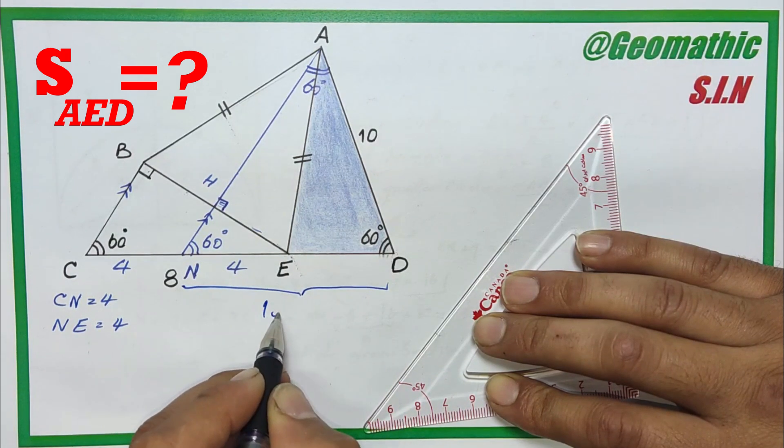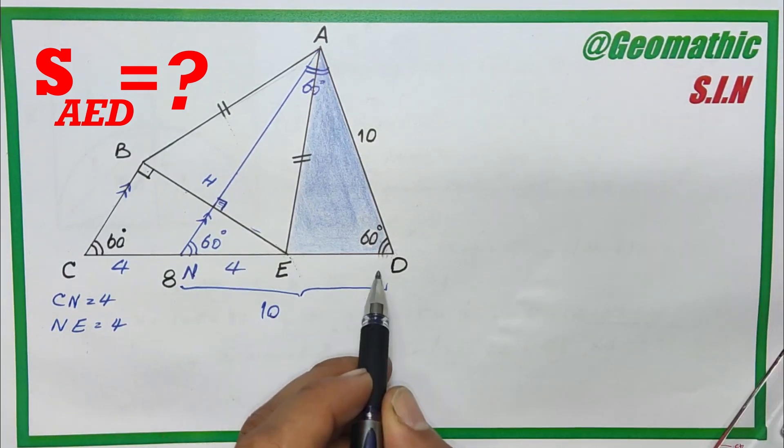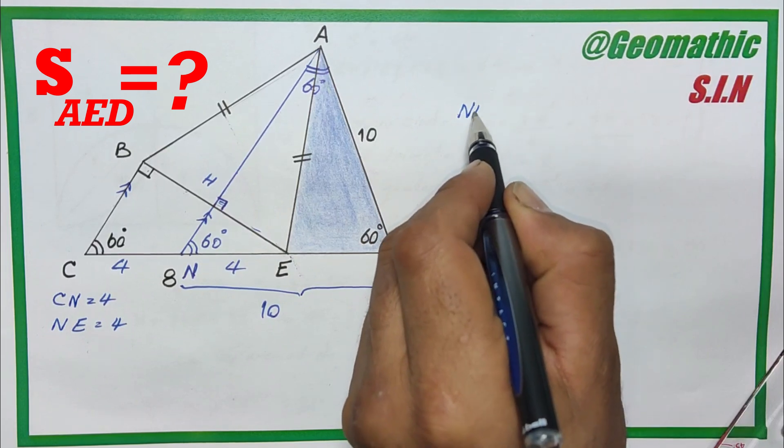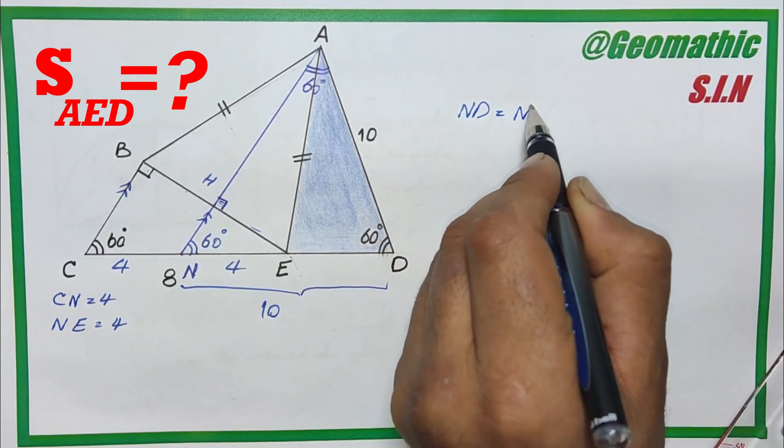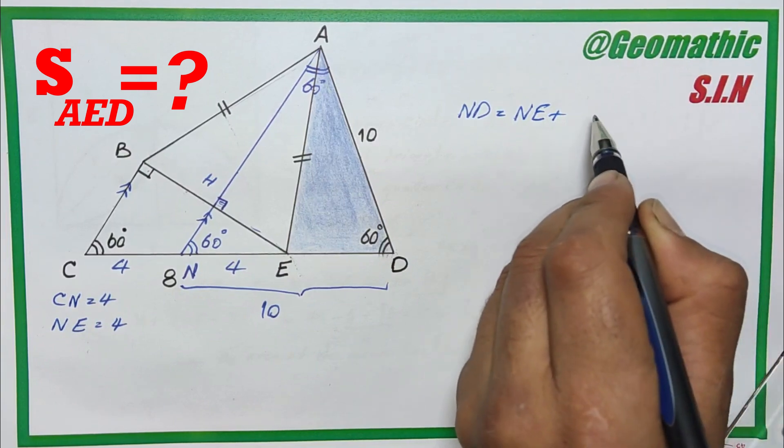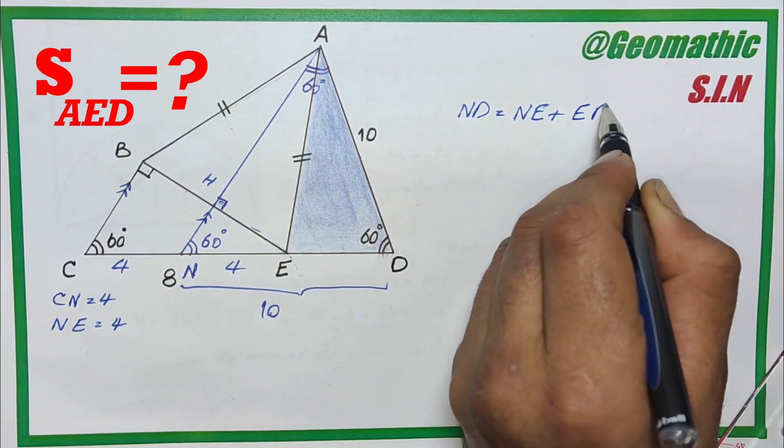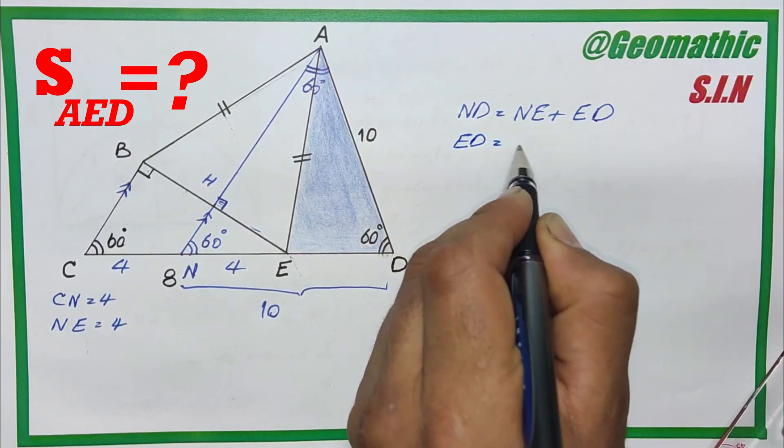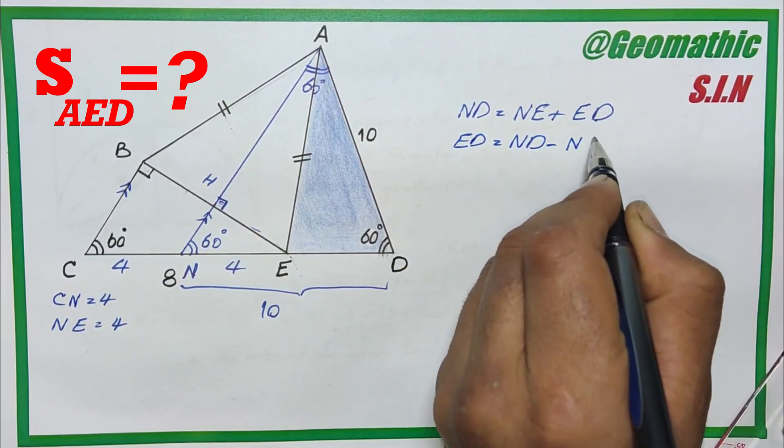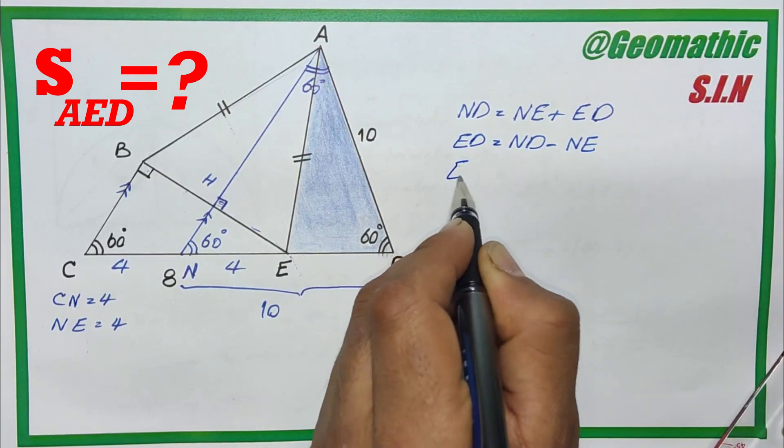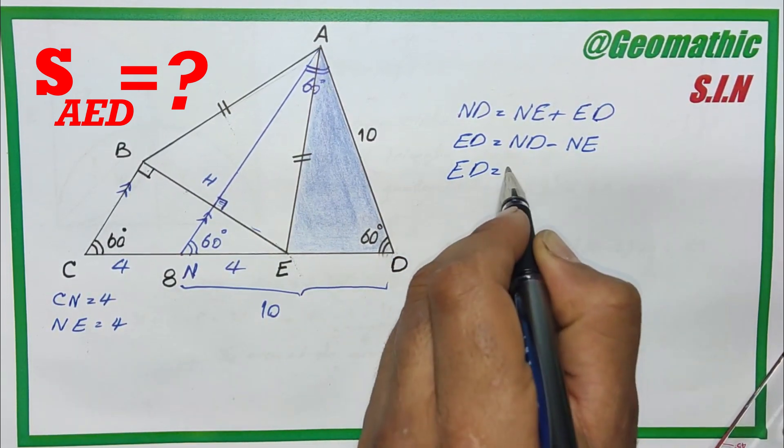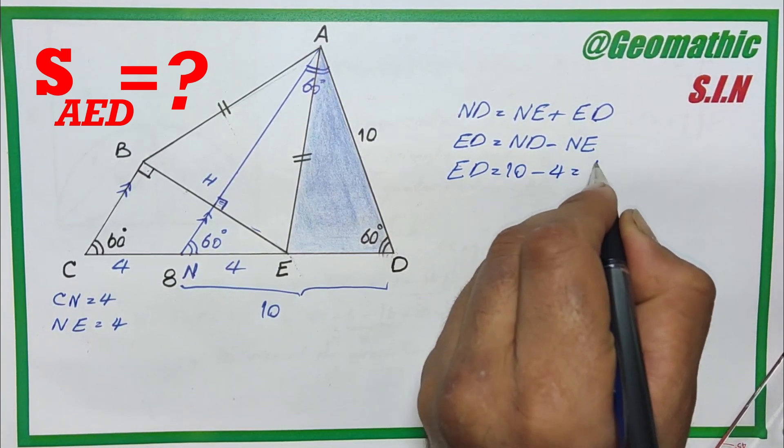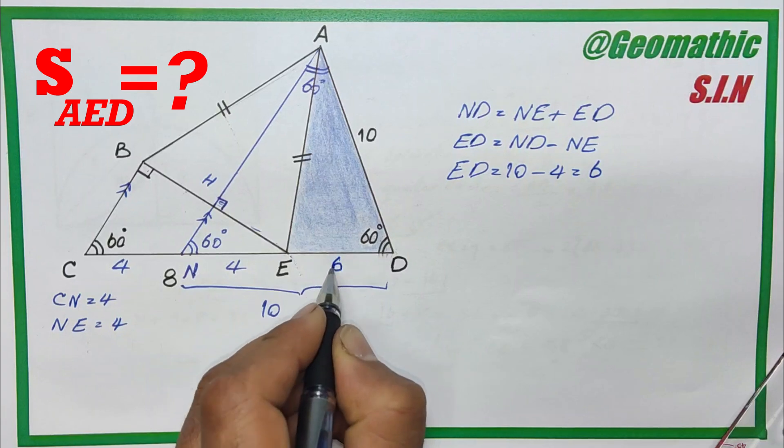And we need the value of ED. So from here we can write ND equals NE plus ED. Because we want ED, we should write ED equals ND minus NE. Then ED equals 10 minus 4, which equals 6. So this side equals 6.